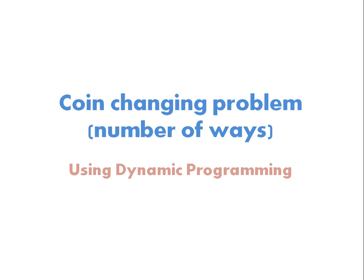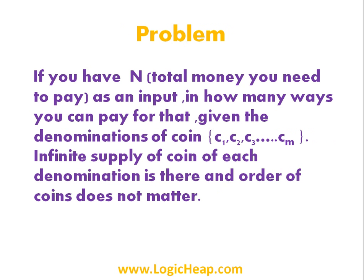Today we are going to discuss a coin changing problem using dynamic programming. The problem is: if you have n as input — total money you need to pay is n — in how many ways can you pay that given the denominations of coins c1, c2, c3 up to cn? There is an infinite supply of coins of each denomination, and the order of coins does not matter.